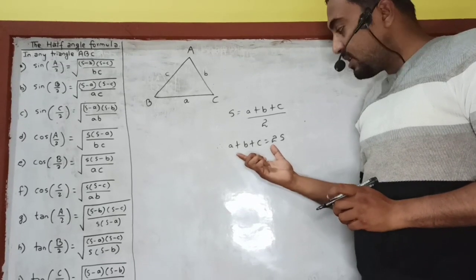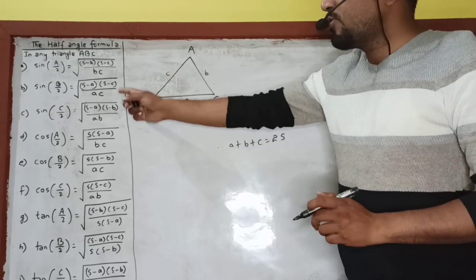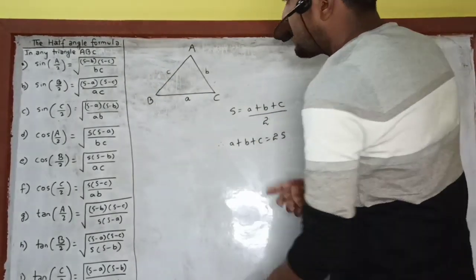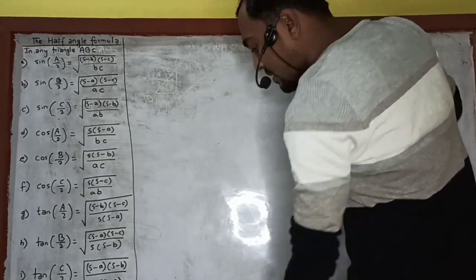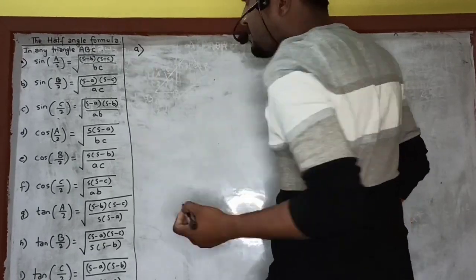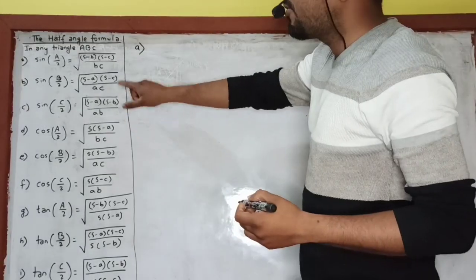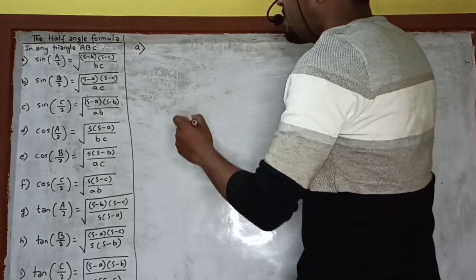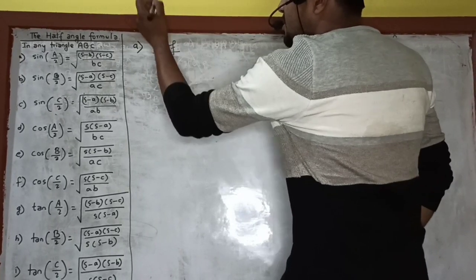Hope you are clear about this. Please note down this point, which we are going to use in the proof of each statement. So let's start the proof. Let us prove the first one, statement A. Among these three — first, second, and third — I will prove any one, and in the remaining two you can prove by using the same process.